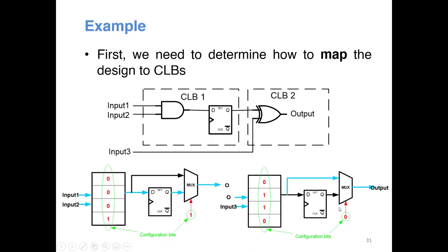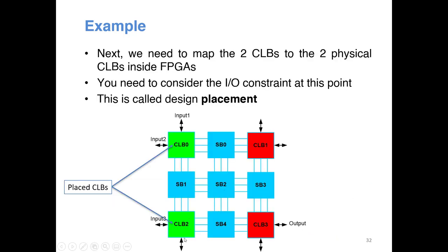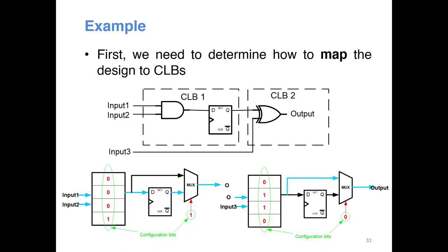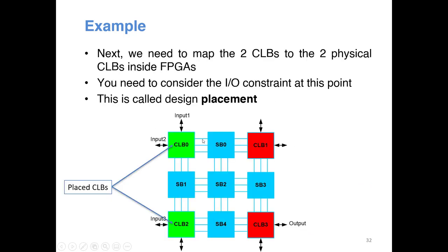In this case I use CLB0 to implement the first mapped CLB and CLB2 to implement the second. CLB0 takes two inputs — Input 1 and Input 2 — mapped from external pins. CLB2 takes one input from the external world mapped to Input 3, and the other input comes from CLB0. The output from CLB2 goes to the external world through a pin. Determining the physical location of each CLB inside an FPGA is called placement. Mapping portions of your circuit to CLBs is called mapping.